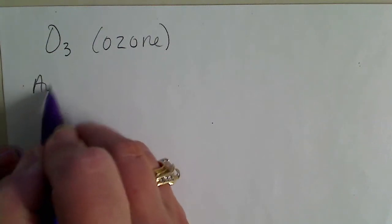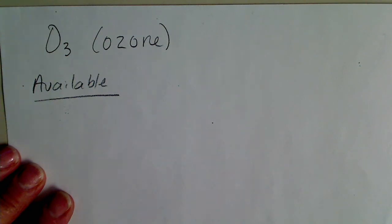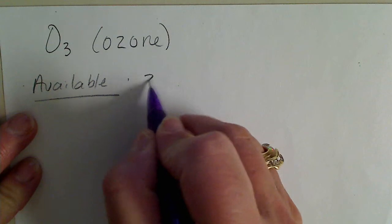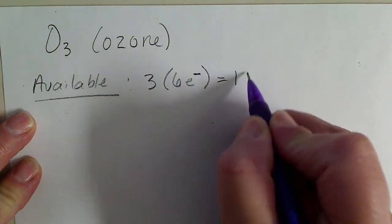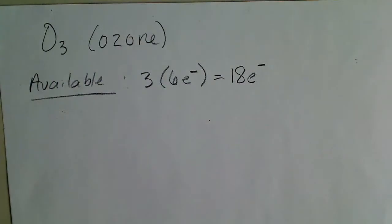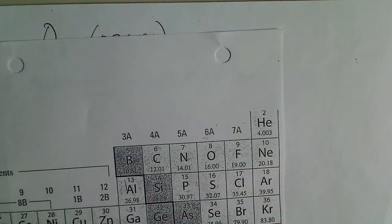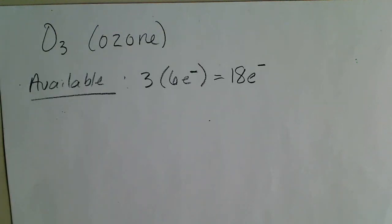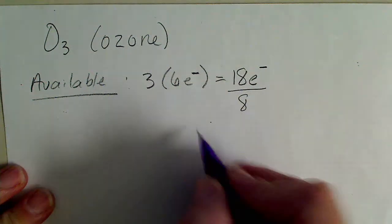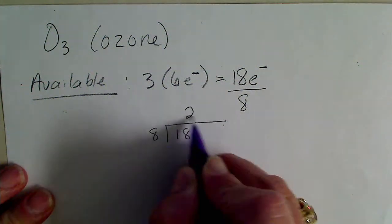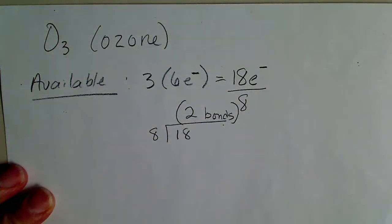For ozone, I'm going to look at the available electrons only. For the next few slides, I'm going to show another method that gives us a quick dot structure. There are three oxygen atoms; each oxygen atom has six valence electrons available to it. We've got eighteen valence electrons from ozone. That six comes from the group number - those are the valence electrons around each atom. Since eight is our magic number, if we divide this available number of electrons by eight, using long division, this goes in two times. That's going to correspond to two bonds.